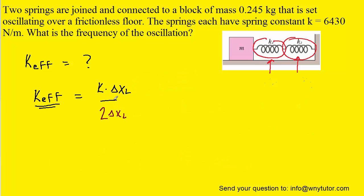When we make those substitutions, delta x_L will cancel, leaving us with an overall effective spring constant of k divided by 2. Now that we have that, we can easily calculate the frequency of the oscillation.